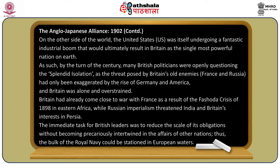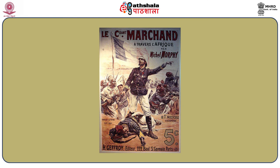Britain had already come close to war with France as a result of the Fashoda Crisis of 1898 in eastern Africa, while Russian imperialism threatened India and Britain's interest in Persia. The immediate task for British leaders was to reduce the scale of its obligations without becoming precariously intertwined in the affairs of other nations, so that the bulk of the Royal Navy could be stationed in European waters.